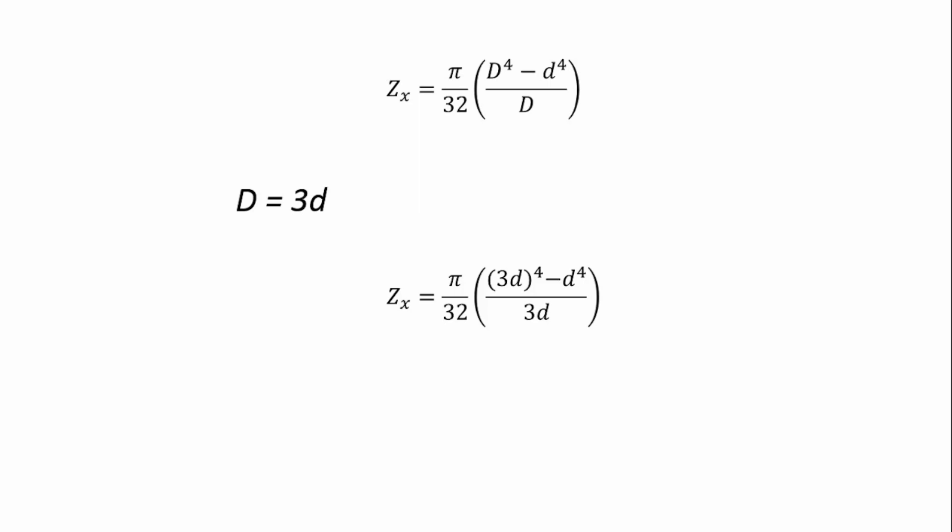If you simplify that equation, you'll get Zx to be equal to 5πd³/6. This is the expression for the section modulus of this circular hollow beam.